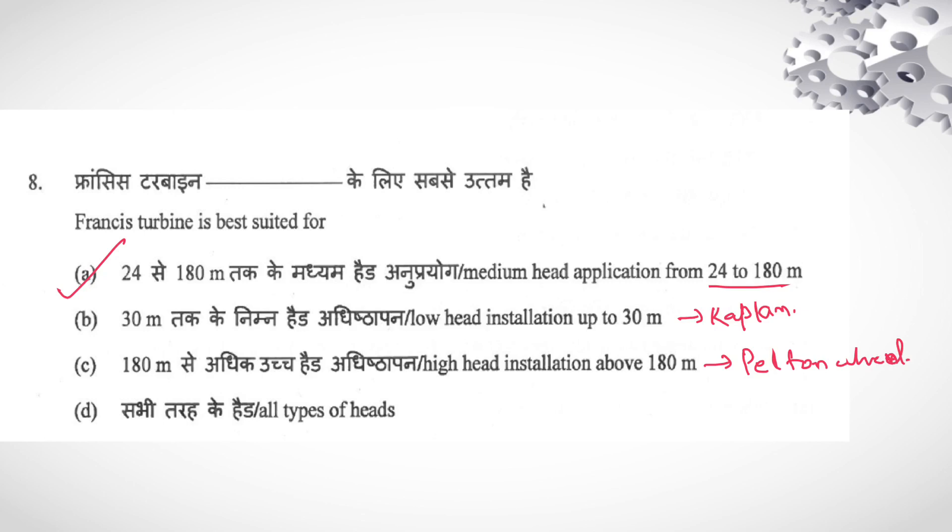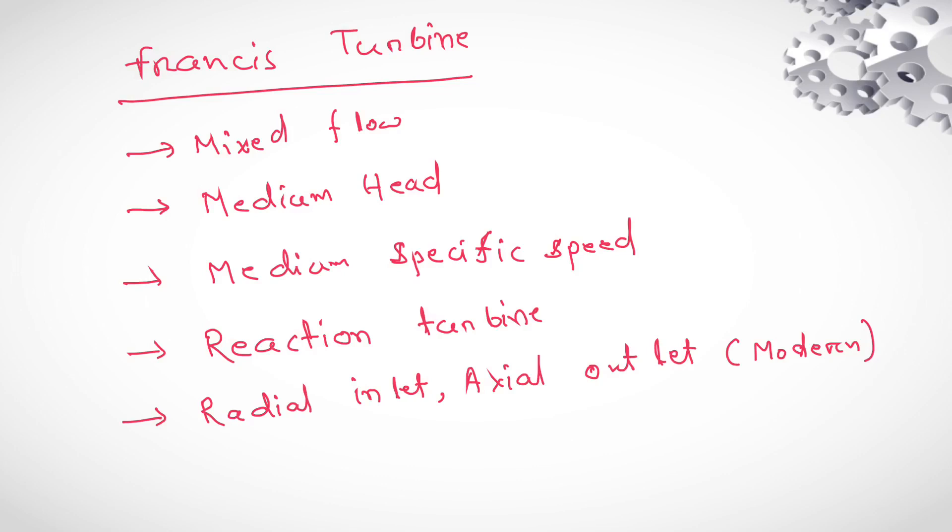Then for high head, they are using your Pelton wheel, Pelton wheel or your impulse turbine. And Francis turbine, it is a mixed flow turbine, it is used for medium head application, for specific speed also medium, it is a reaction turbine. And for modern Francis turbine, its inlet is radial and axial, outlet is axial, opposite of your centrifugal pump. In case of centrifugal pump, your inlet is axial and outlet is radial.